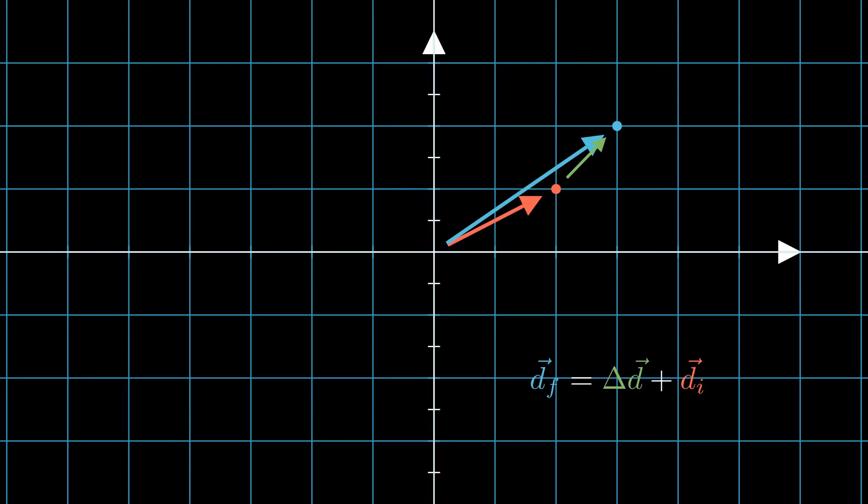Thus, we can find that this vector is simply the final position subtracted by the initial position. This is called the displacement vector, and I'm denoting it with this delta symbol because it means a change.